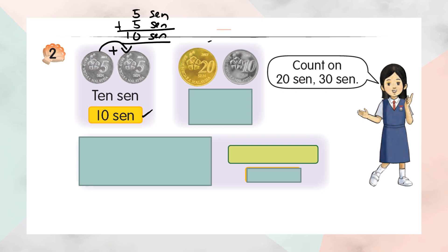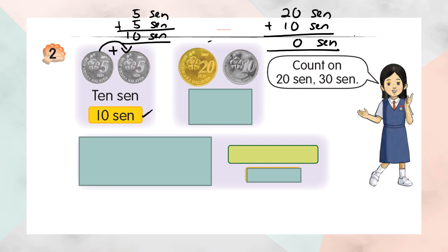If twenty cent plus ten cent — twenty cent plus ten cent, you will get thirty cent.